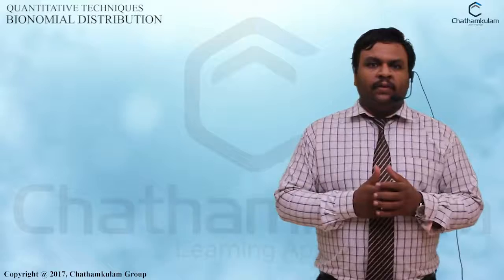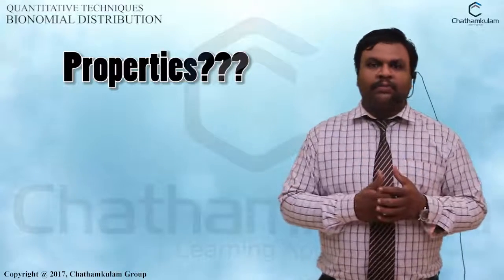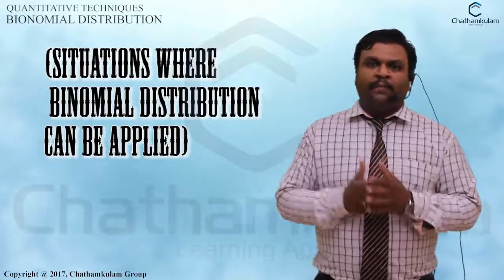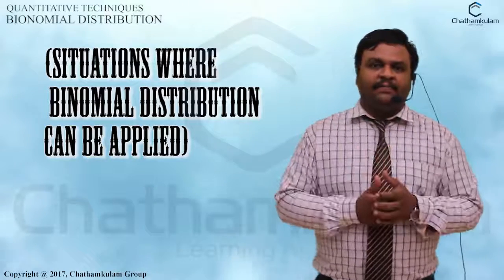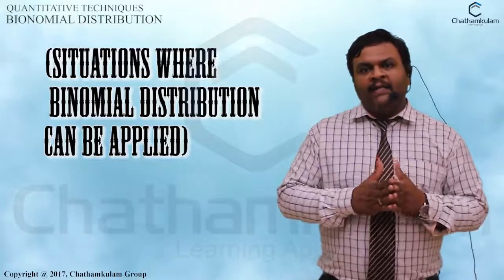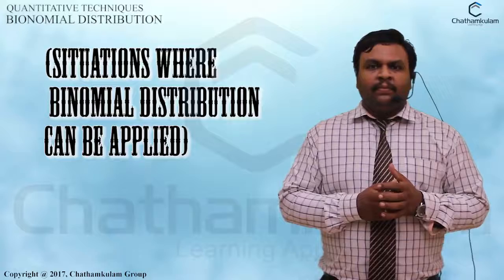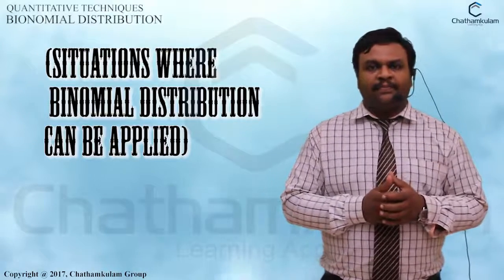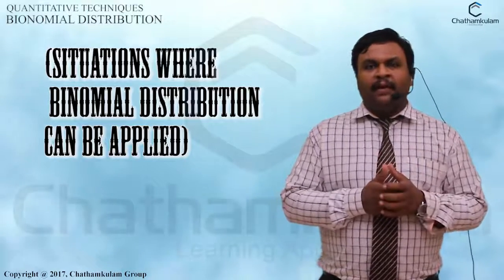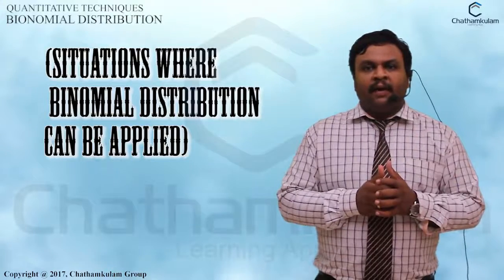Next, we discuss the properties and situations where we can apply binomial distribution. The first property is the experiment should have only two outcomes: one is success and another is failure. The second is the probability of happening an event is the same in all trials and each trial should have only two events. The third is that trials should be independent, and the experiment must be repeated under identical conditions.